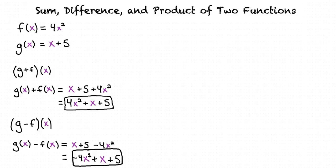So to find the product of these two functions, we would follow the same procedure but multiply the functions together this time? Exactly. We would rewrite g times f of x as g of x times f of x.